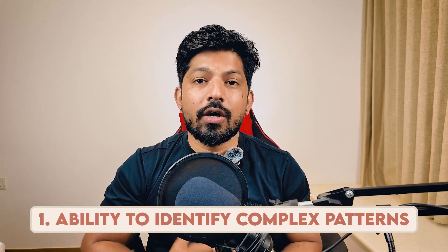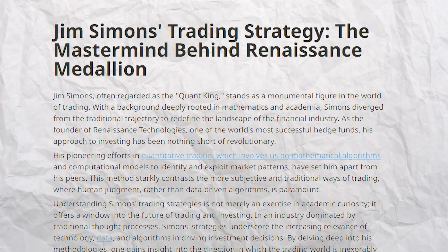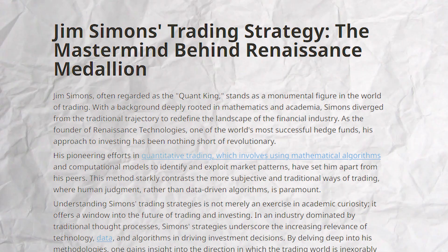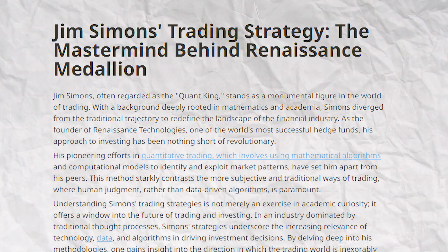The first pro of machine learning in quant trading is the ability to identify complex patterns. For example, Renaissance Technologies, one of the most successful quant funds, is known for using machine learning models to identify hidden patterns in financial data. Their Medallion Fund has consistently outperformed the markets with annualized returns of 35%, leveraging machine learning models to find subtle non-linear relationships across vast datasets that human traders would likely miss.